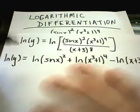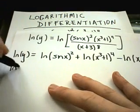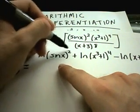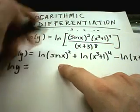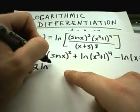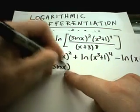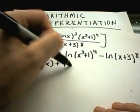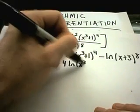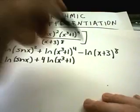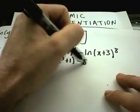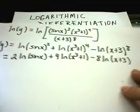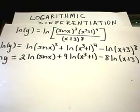We can actually simplify this a little bit further. So again, ln of y just ln of y. Remember if you have powers you can pull those powers out front as constants, so I'll get 2 ln of sin of x. The four will come out front, I'll have ln of x cubed plus one, again the power is gone. And the eight will come out front, I'll have ln of x plus three.